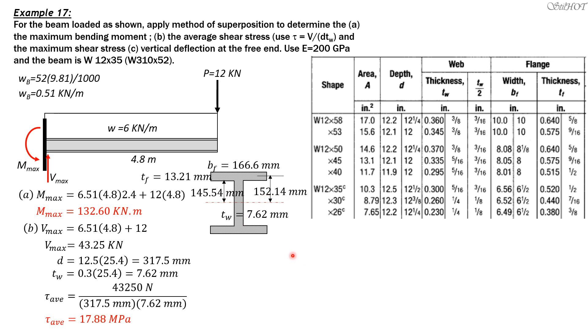We can now compute capital Q, the static moment of area. From VQ over IB, Q is 166.6 times 13.21 times the moment arm 152.14 from the neutral axis, plus this rectangle here which is 7.62 times 145.54 times the distance of the centroid, half of 145.54. So the static moment of area is 115,530.6 millimeters cubed.